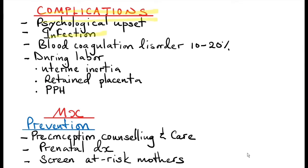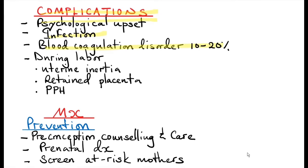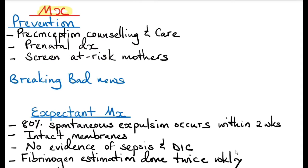Complications of intrauterine fetal death include psychological upset and infection. The amniotic cavity is sterile as long as the membranes remain intact, so infection is unlikely with intact membranes. However, once membranes rupture, infection by gas-forming organisms like Clostridium may occur, potentially leading to sepsis. Blood coagulation disorders occur in 10 to 20 percent of cases where a fetus has been retained more than four weeks — byproducts of tissue breakdown enter the maternal circulation and trigger disseminated intravascular coagulation. During labor, complications include uterine inertia, retained placenta, and postpartum haemorrhage.